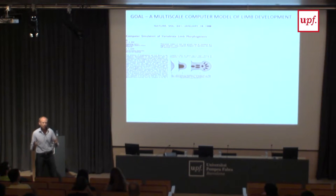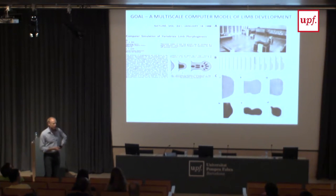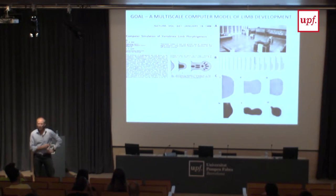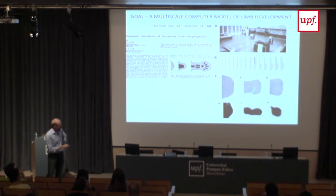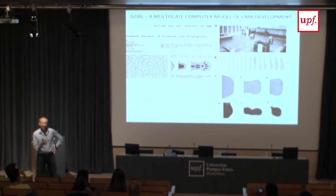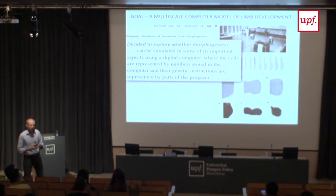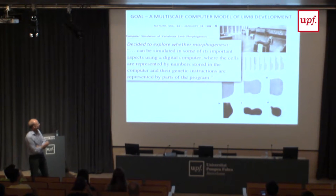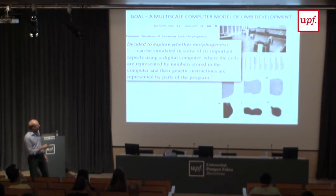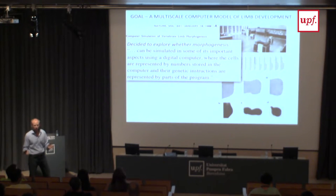People were realising that this was the way to go decades ago. The computer the simulation was done on had 24K of RAM and the output was printed on a printer as asterisks. They wrote something remarkable for 1969: that they had decided to explore whether morphogenesis can be simulated in some of its important aspects using a digital computer - where cells are represented by numbers stored in the computer and their genetic instructions are represented by parts of the program. It's prophetic because that's what we're still trying to do now. They modestly noted that because of the limitations imposed by the methods of printout and core store capacity, there were compelling reasons for restricting the model to growth patterns in two dimensions only - and we're still publishing two-dimensional models decades later.